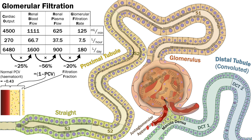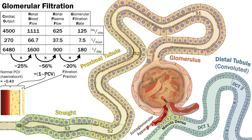This is still a staggeringly large amount of fluid. With a GFR of 125 mls per minute, that's 7.5 litres per hour, or 180 litres per day — the volume of fluid flowing into the nephron. At this point, it almost has the same composition as serum.